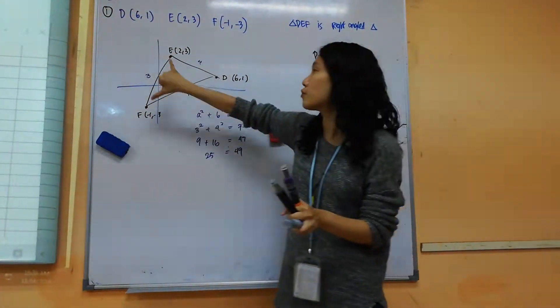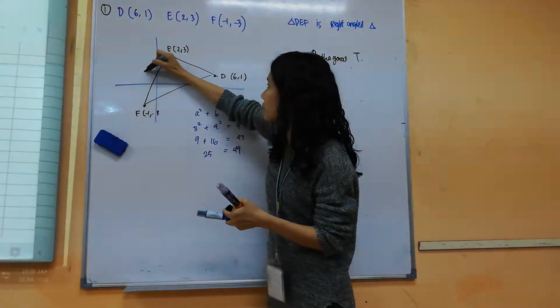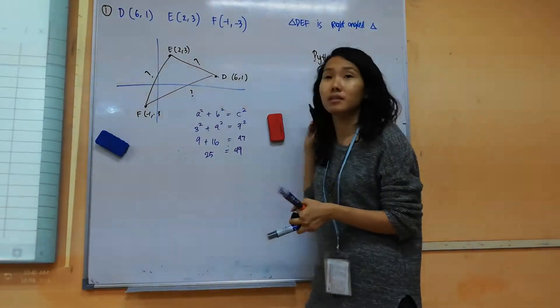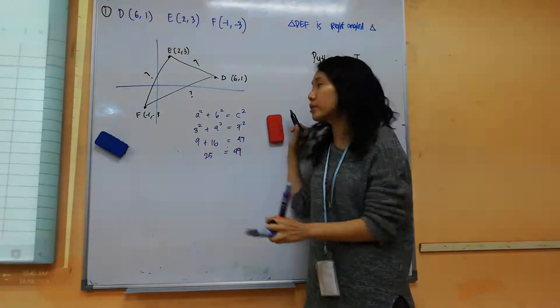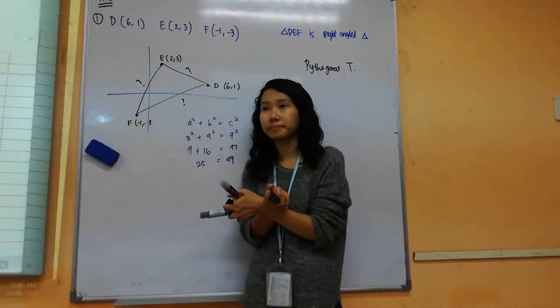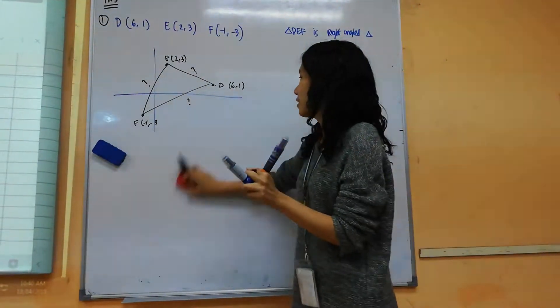So therefore our goal is actually to find out how long actually is EF, how long is actually ED, and how long is actually FD. Then after that, we put them inside Pythagoras theorem and see whether it fits. That's how you show that this is right.